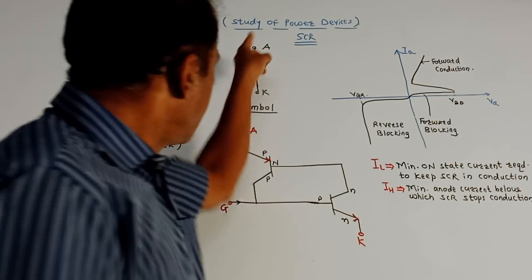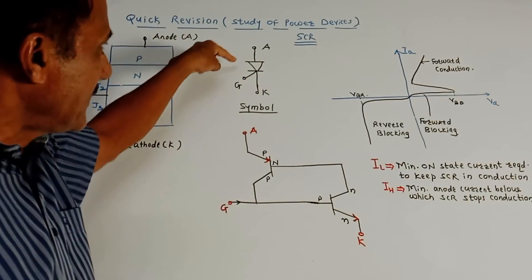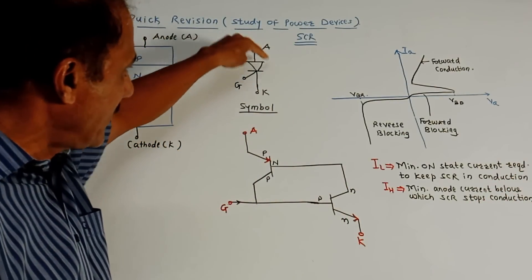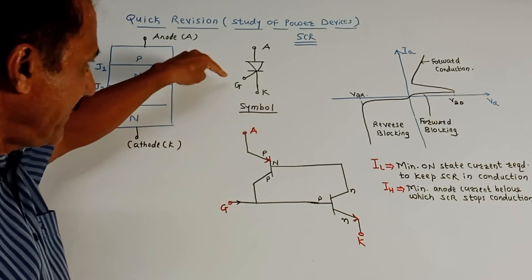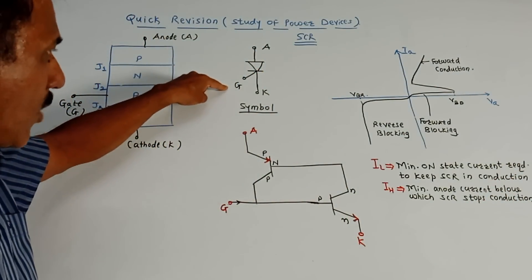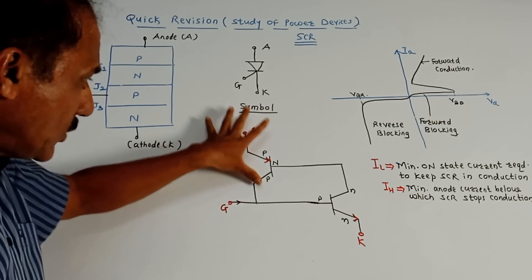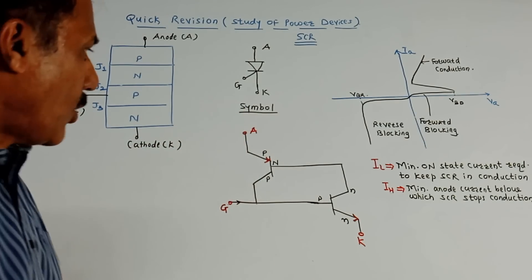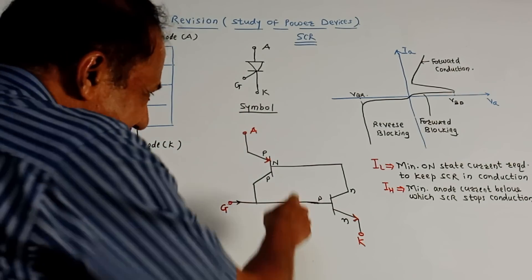This is called a controlled device because the current flowing from anode to cathode is controlled by applying a signal at the gate terminal — so it is a Silicon Controlled Rectifier. This is the corresponding symbol showing the anode terminal, cathode terminal, and gate terminal.